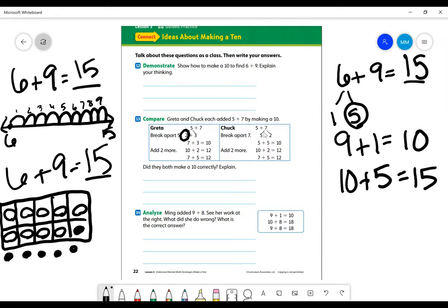Now Chuck, he broke the 7 into 2 parts. He knew that 5 plus 2 could make 7. And he also knew that if he had 5 plus 5, that makes a group of 10. And then he didn't forget that 2. So he added 10 plus 2 more. And 7 plus 5 also made 12. So friends, this strategy, they both got the same answer and they both were able to make a 10, right? They were both able to break one of their parts into 2 smaller parts to help make a 10 and add the extra ones.